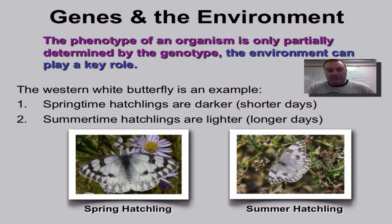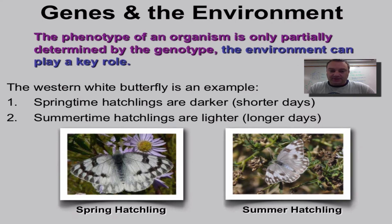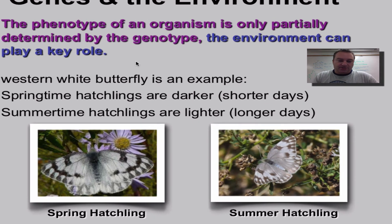From our textbook we have the example of the western white butterfly. Depending on whether it's born in the spring or hatches in the summer, its wing color can be slightly different. In the springtime the days are shorter, temperatures are a little cooler, and so it's a little bit harder for the butterfly's wings to dry out and fully form so it can take flight after it hatches. As you can see in this picture, there are darker black spots on its wings.